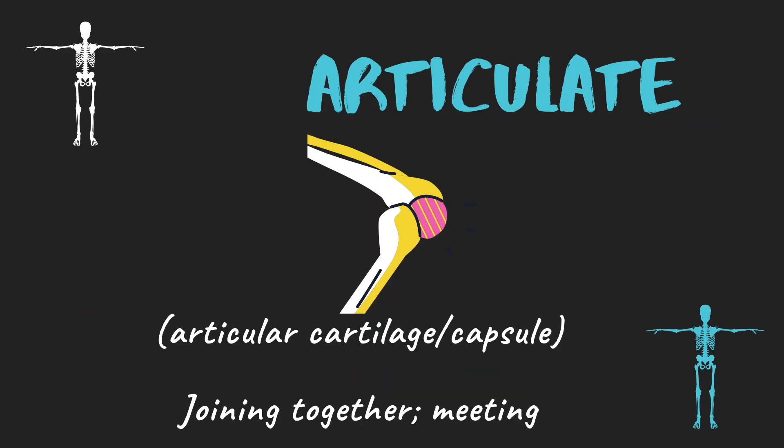Next we have the word 'articulate', and we also have articular cartilage and articular capsule. All the word articulate means is simply where bones meet, where they join together. To define a joint, it's where two or more bones articulate. Articular cartilage is cartilage at the end of the bone to prevent rubbing with another bone — it's where they meet. Every time you see 'articulate', it's referring to the ends of the bones.